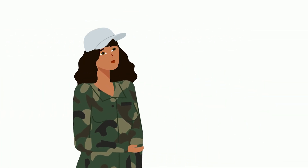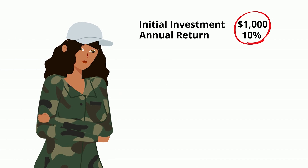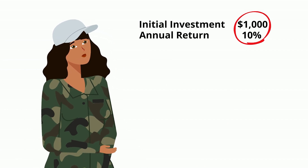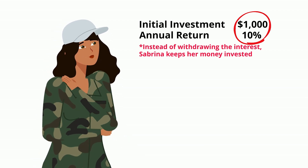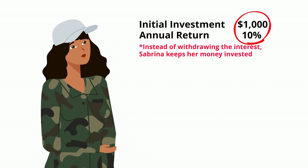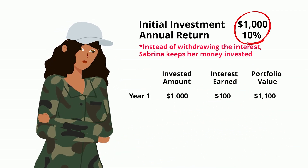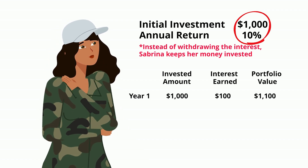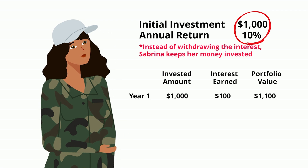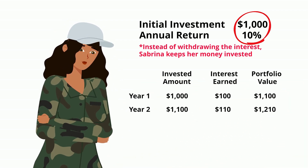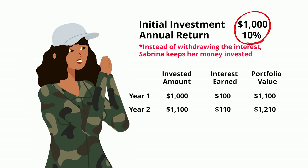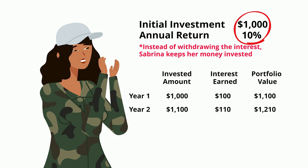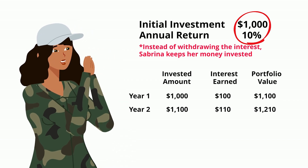Now let's shift our focus to Sabrina. Like Jason, she invests $1,000 and also enjoys a 10% annual return. However, Sabrina takes a different approach — instead of withdrawing the interest, she keeps her money invested. After one year, she earns the same $100 in interest as Jason. But here's where the magic of compound interest starts to kick in. In the second year, Sabrina doesn't just earn $100 — she earns $110, because the 10% interest is calculated based on the $1,100 she accumulated after the first year. So after two years, Sabrina has $1,210.